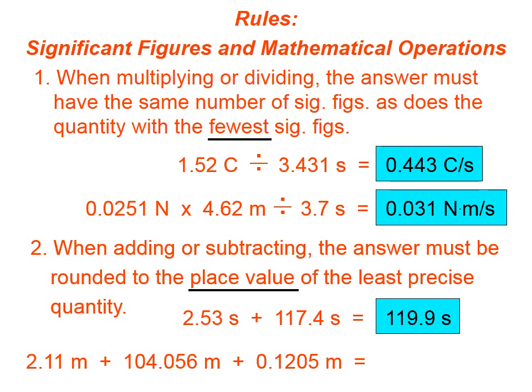Let's try the one on the bottom. This quantity on the left is rounded to the hundredths place. This quantity here is rounded to the thousandths place. And this quantity on the right is rounded to the ten thousandths place. Which of those is the least precise? Well, that would be the hundredths place. So, we're just going to type that as is into our calculator, but we're going to make sure we round it to the hundredths place.